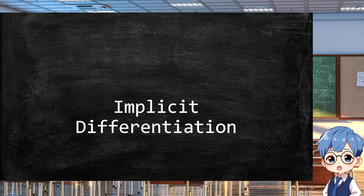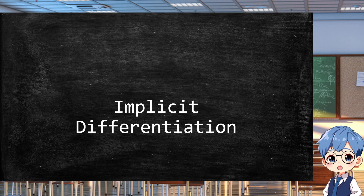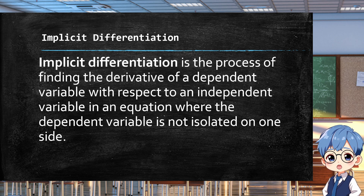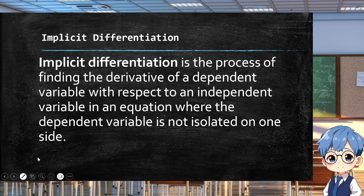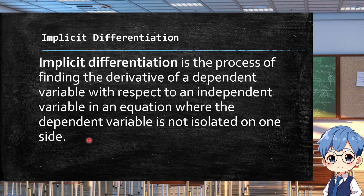Let's try to define first what implicit differentiation is. Implicit differentiation is the process of finding the derivative of a dependent variable with respect to an independent variable in an equation where the dependent variable is not isolated on one side.